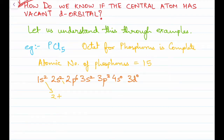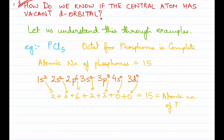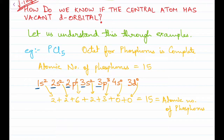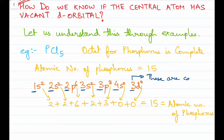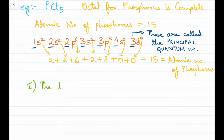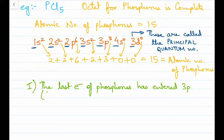When you add up the superscript numbers they should equal the atomic number of phosphorus, which is 15. The coefficients s, p, d, f represent the principal quantum number. To find out if phosphorus in PCl5 has a vacant d orbital: the last electron of phosphorus has entered 3p, so the principal quantum number is 3.